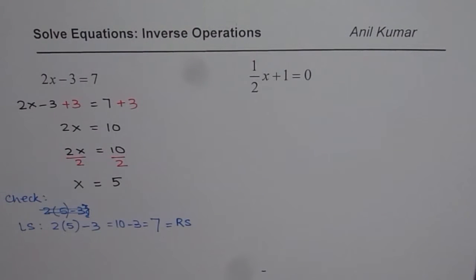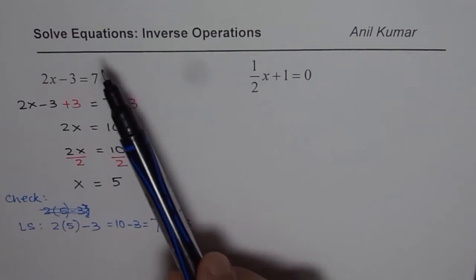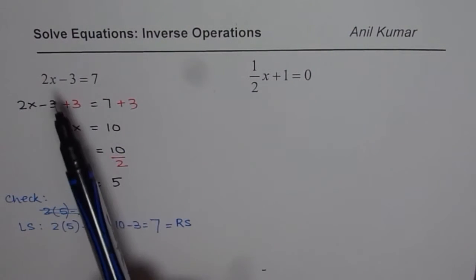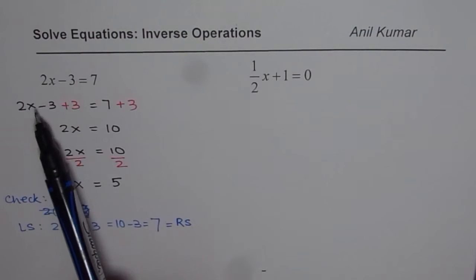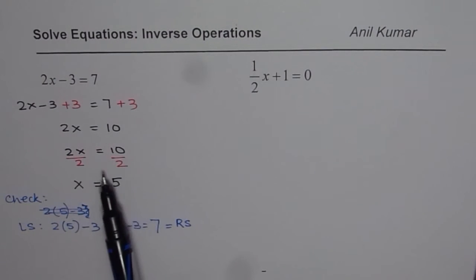So I hope the steps are very clear. Solving by inverse operation is for negative do plus of the same thing. For multiplication do division on both sides. And then solve for the variable.